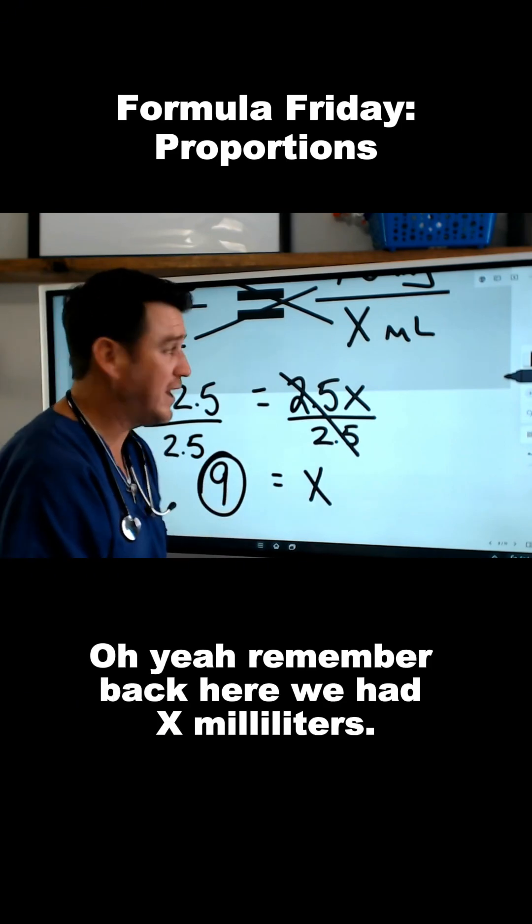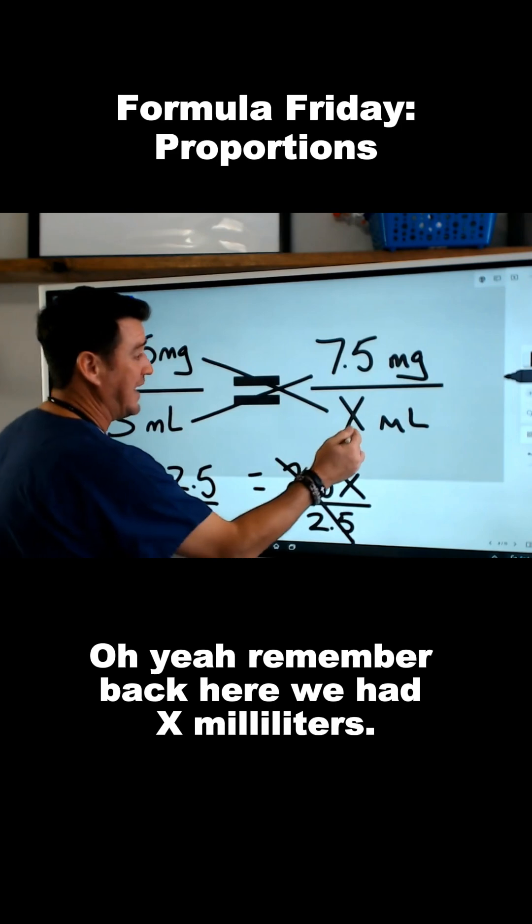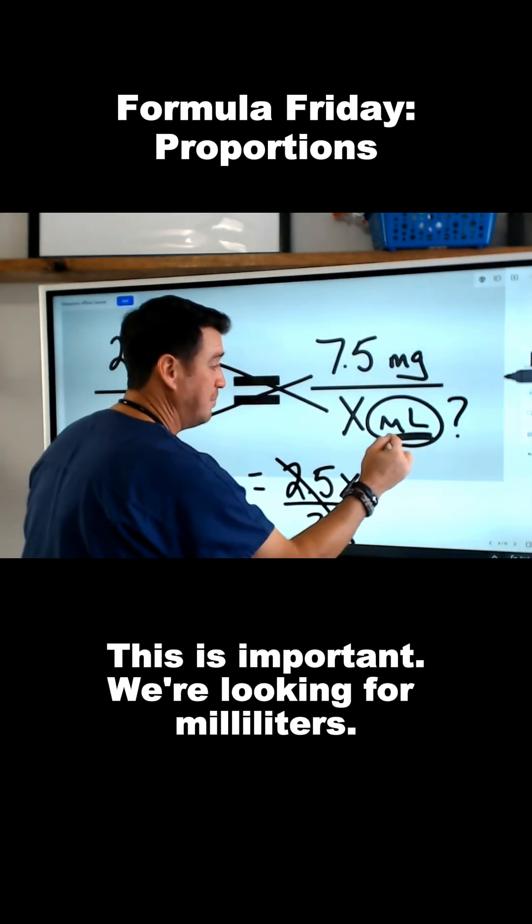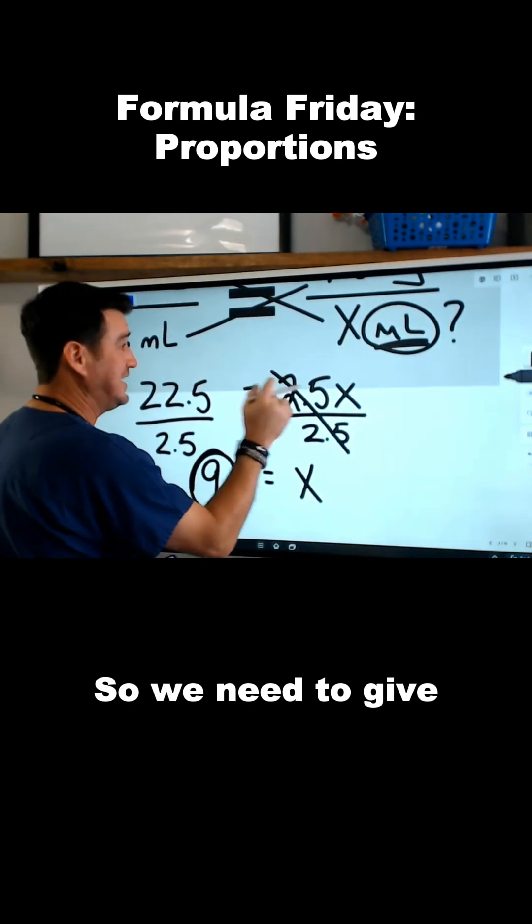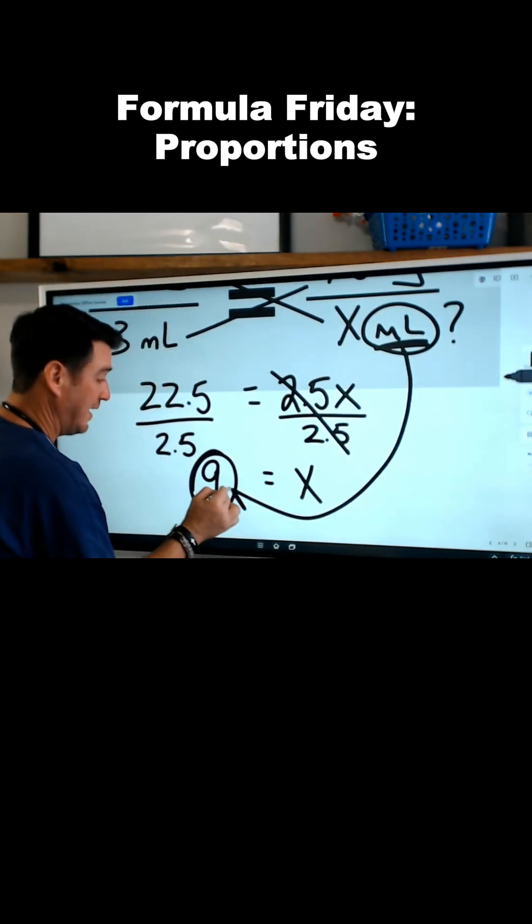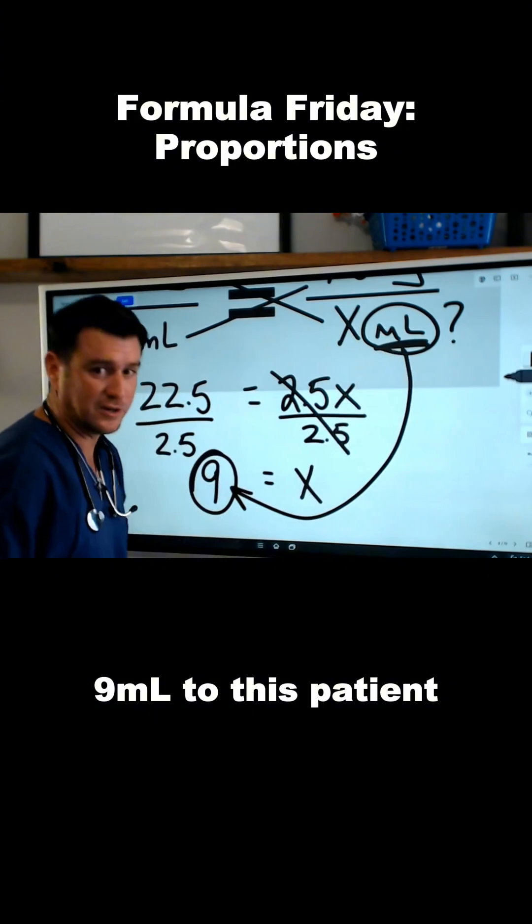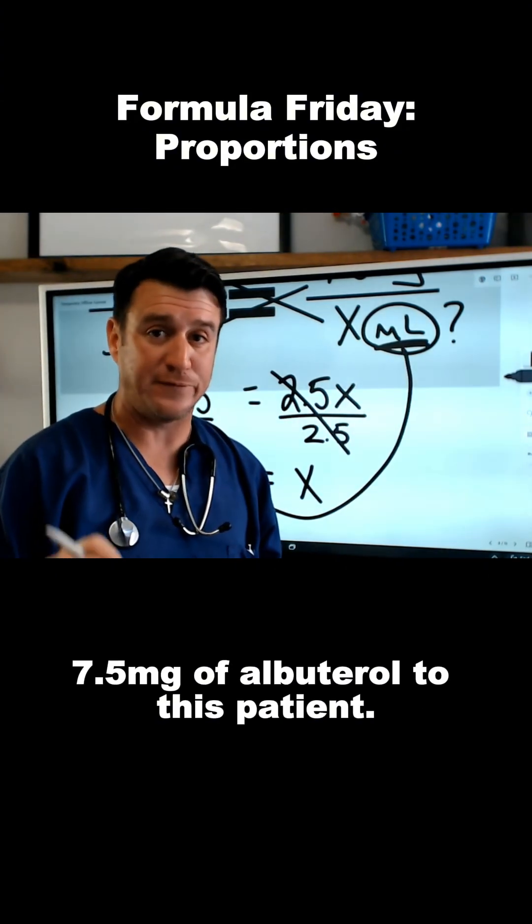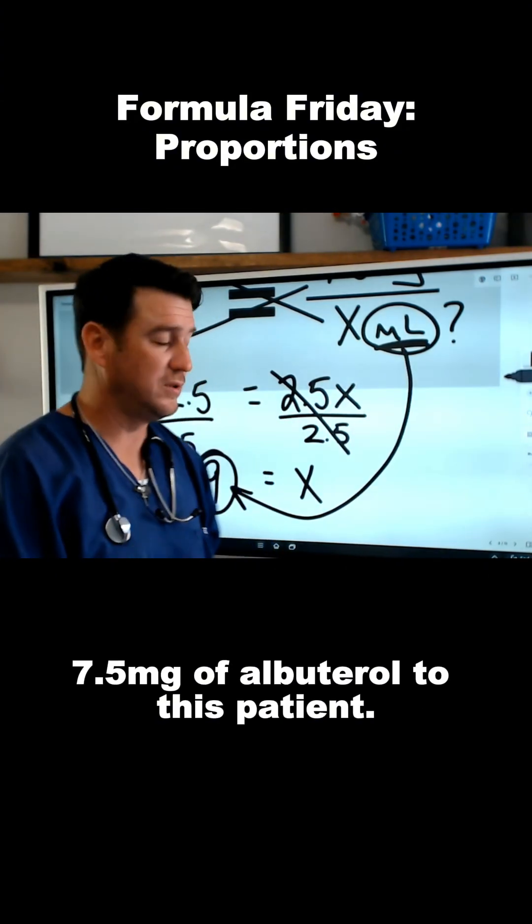9 what? Remember back here? We had x milliliters. This is important. We're looking for milliliters. So we need to give 9 milliliters to this patient to deliver 7.5 milligrams of albuterol to this patient.